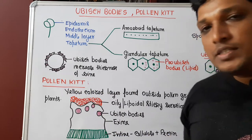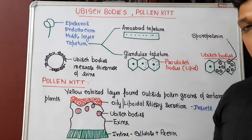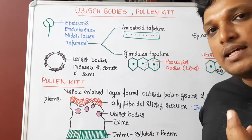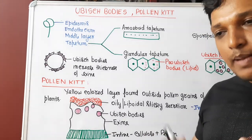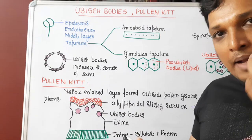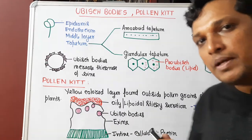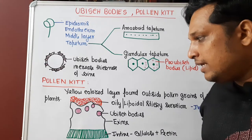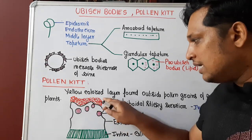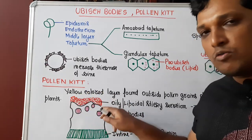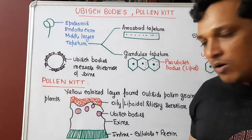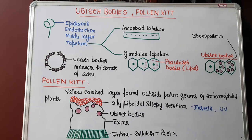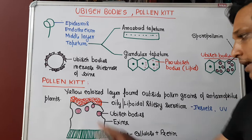Second, what is pollen kit? Pollen kit is found in entomophilous plants — plants whose pollen grains are carried by insects. To attract the insect, their pollen grains will have a yellowish lipid layer around the exine, and that is called pollen kit. So, it is a yellow-colored layer found outside the pollen grain in entomophilous plants.